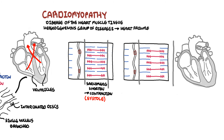The sarcomere lengthens and this is where the cardiac muscle cells relax. The relaxation process is termed diastole — this is when the ventricles fill with blood, preparing for another contraction.